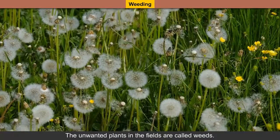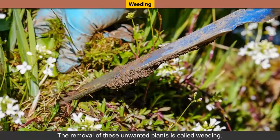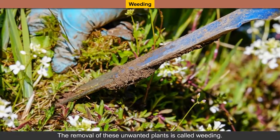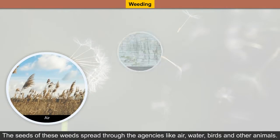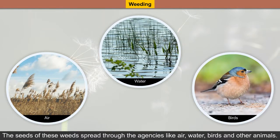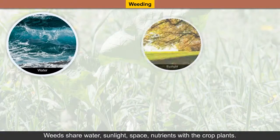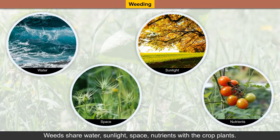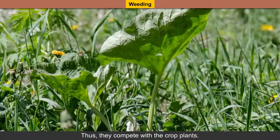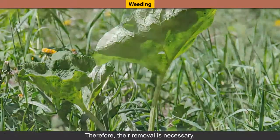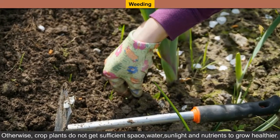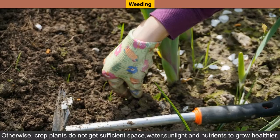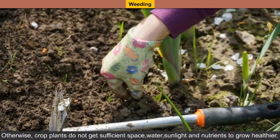Weeding: The unwanted plants in the fields are called weeds. The removal of these unwanted plants is called weeding. The seeds of these weeds spread through agencies like air, water, birds and other animals. Weeds share water, sunlight, space and nutrients with the crop plants — thus they compete with the crop plants. Therefore, their removal is necessary. Otherwise, crop plants do not get sufficient space, water, sunlight and nutrients to grow healthier.